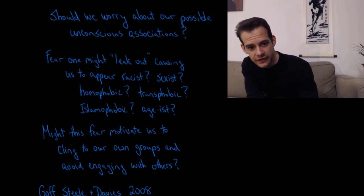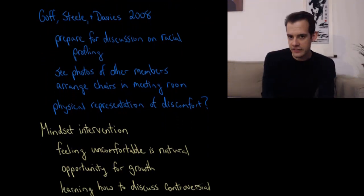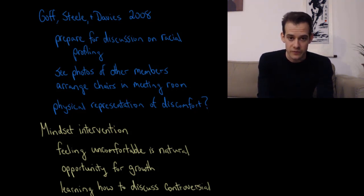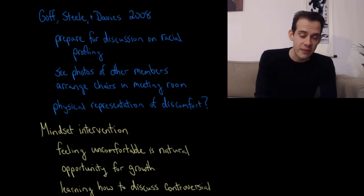And this brings us to a study by Philip Goff, Claude Steele, and Paul Davies in 2008. And in this study, what the researchers did was they asked participants to prepare for a discussion on racial profiling. So this is potentially a controversial subject. And in the course of getting ready for this discussion, the participants have a chance to see some photos of the other members. So they happen to see some of the paperwork that's there of who's supposed to be arriving. And so they see who they're going to be having this discussion with, the two other participants. And they're asked to help set up and they're asked to just help arrange the chairs in the meeting room.